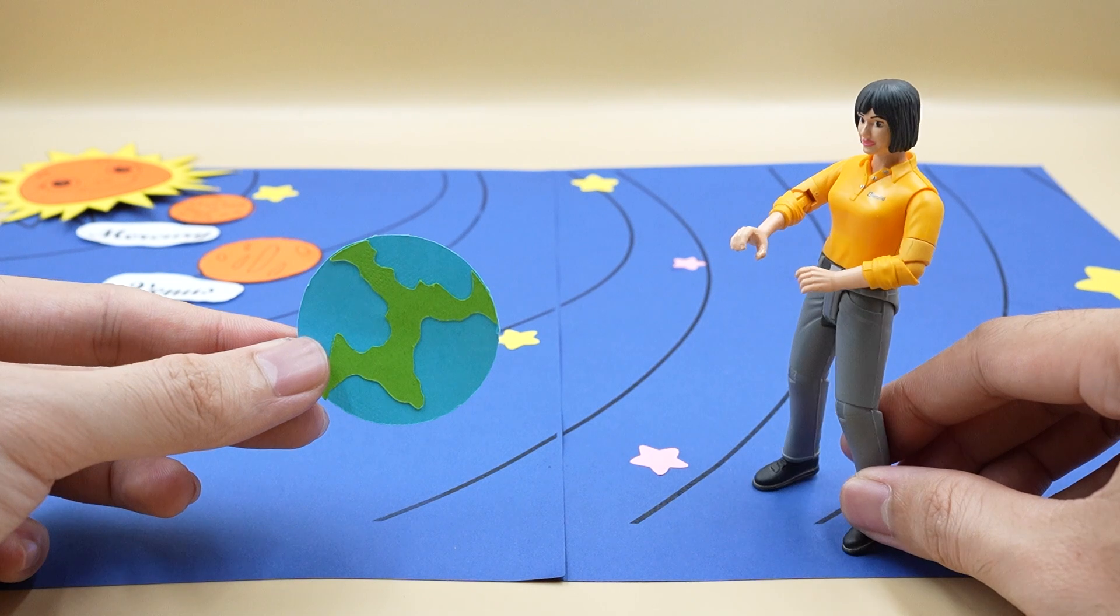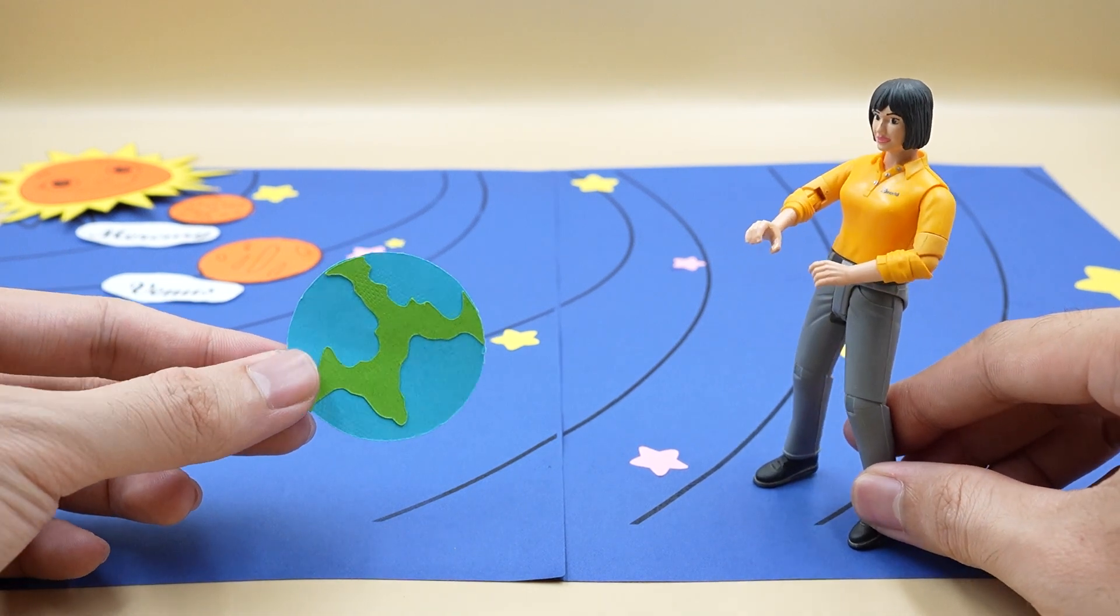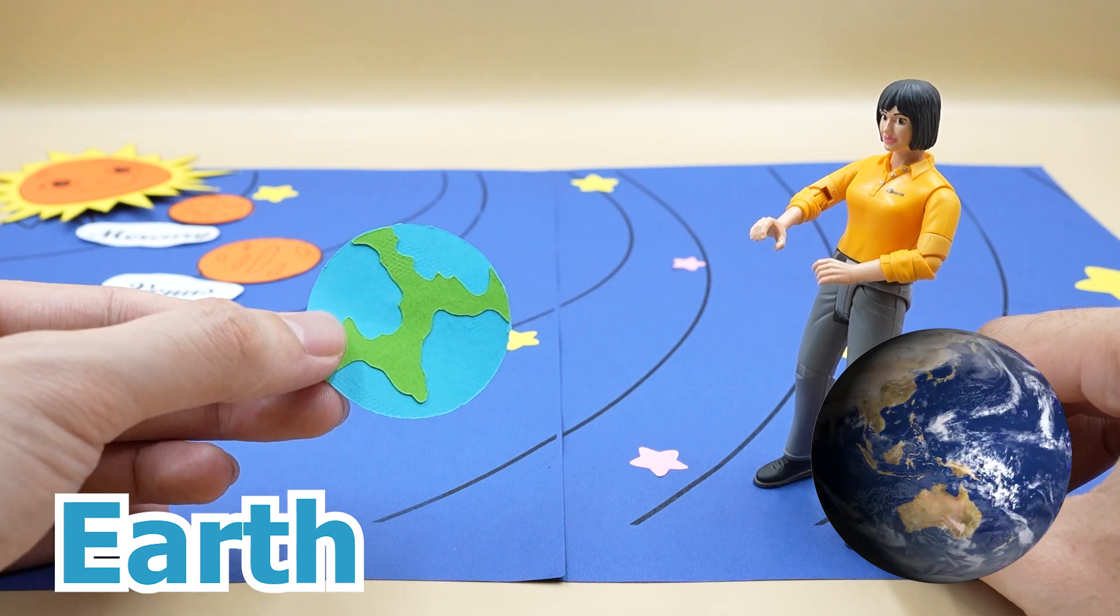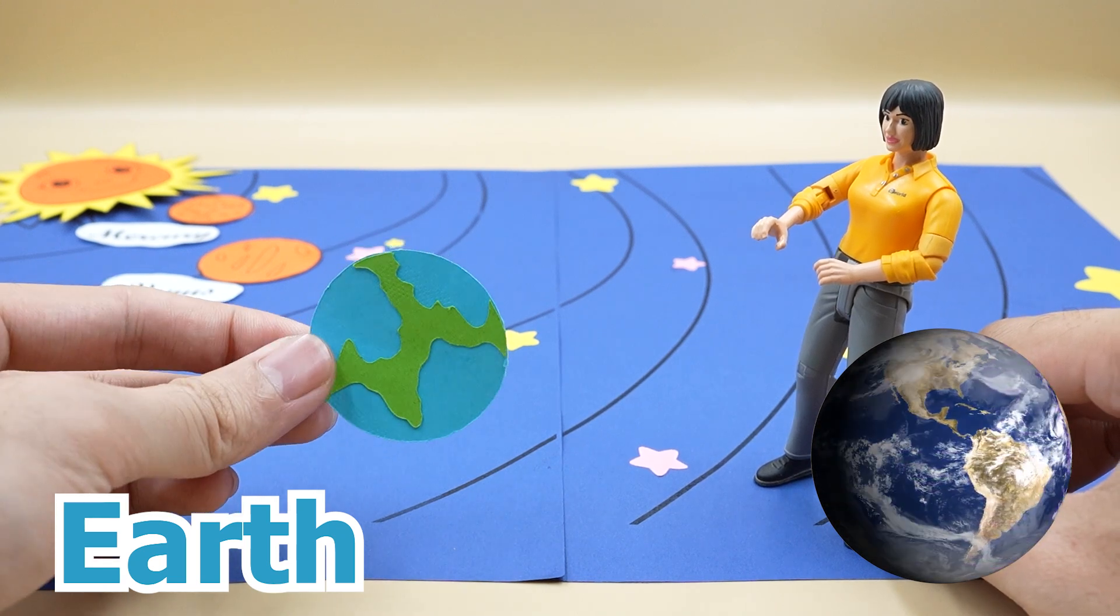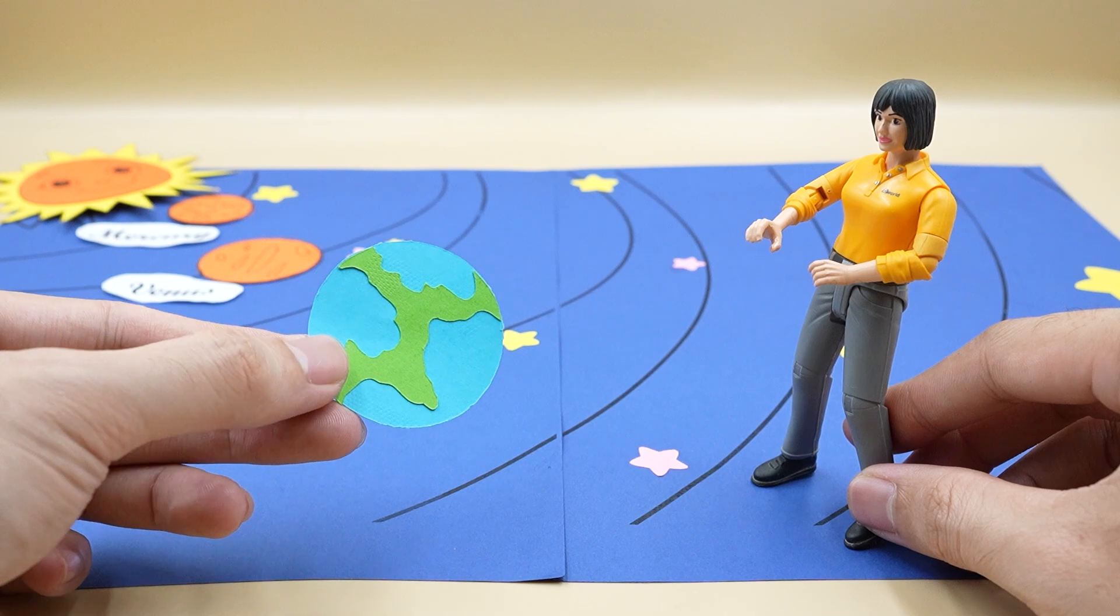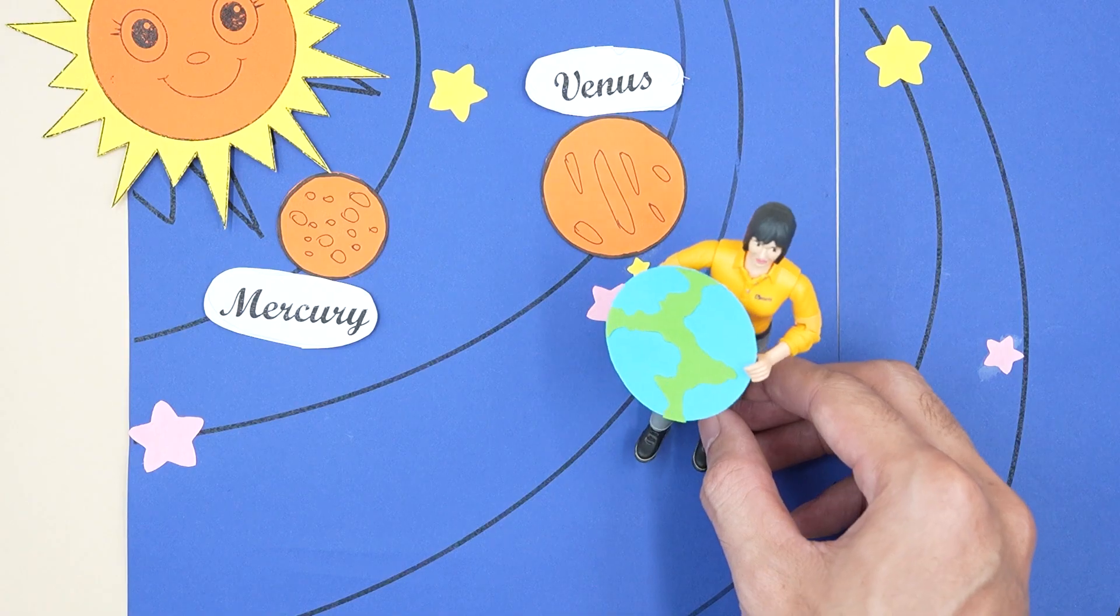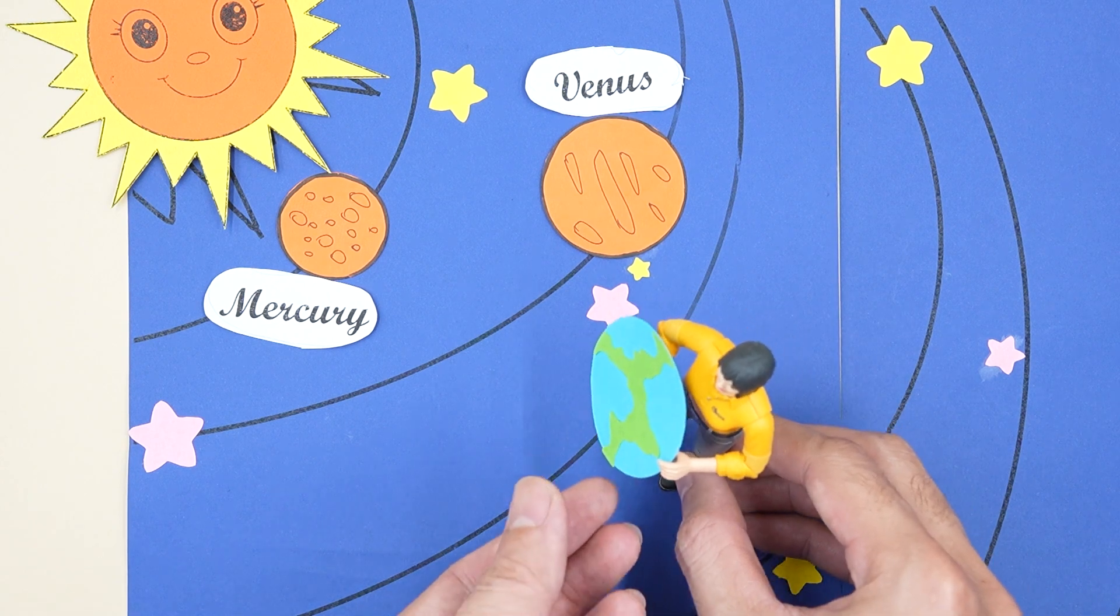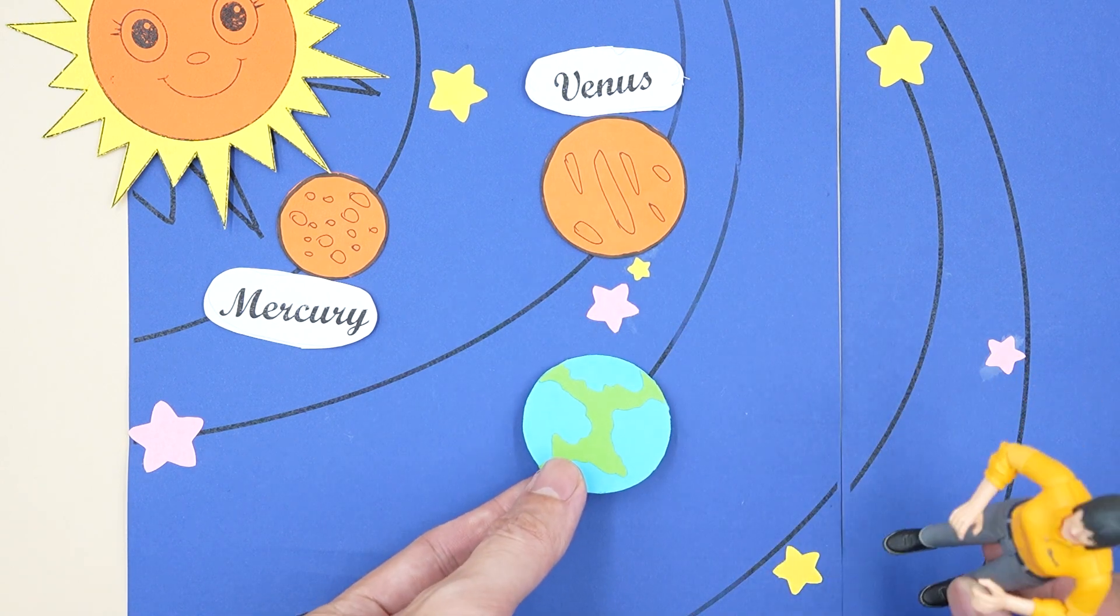The third star. What star is this? Wow, this is a star that looks very familiar. This is the Earth we live on. There are two main colors. Blue represents the blue sea and leaves represent the land. This is the only star with life in the solar system. Okay, I will help you put the Earth in third place in the solar system.